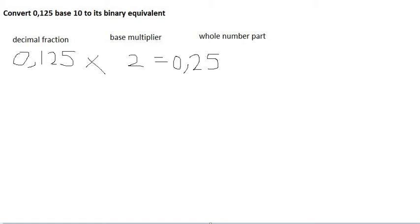We note the whole number part. The whole number part in this case is 0, so we note 0. Then we take the decimal fraction that is still 0.25, we say times the base multiplier that is 2, we get 0.5.